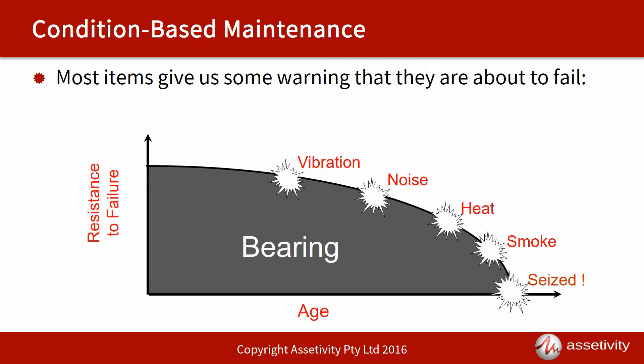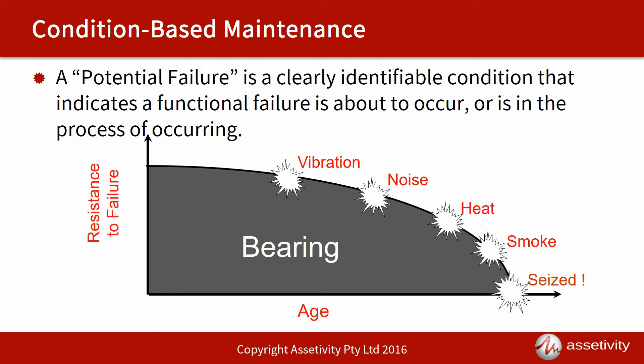A 'potential failure condition' — a term frequently used in reliability-centred maintenance — is a clearly identifiable condition that indicates that a functional failure is about to occur, or that the bearing is in the process of occurring. 'Clearly identifiable' means not just a vague term like 'running hot,' but specifying, for example, the temperature at which we would set an alarm level — such as 65 degrees Celsius — as our potential failure condition.